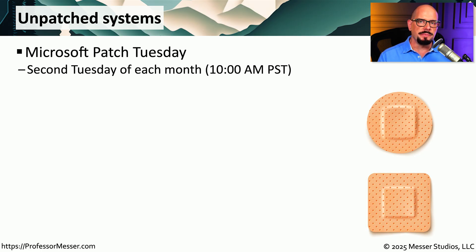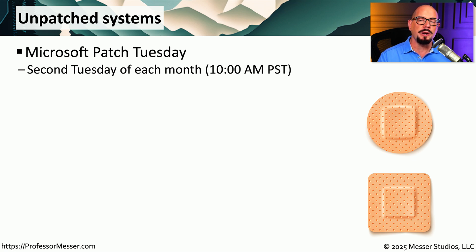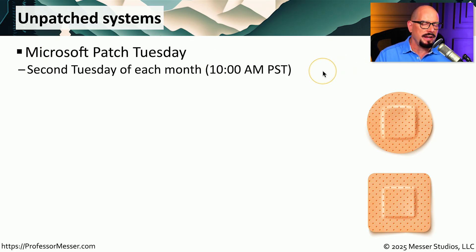An unpatched system contains known vulnerabilities that an attacker could use to gain access to those systems. For that reason, we are very diligent about making sure that we are patching and updating all of the systems on our network. You've probably seen this on Microsoft Patch Tuesday — the second Tuesday of every month where Microsoft releases the latest batch of updates for their operating systems.